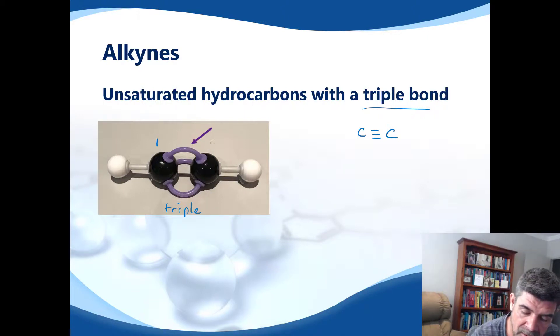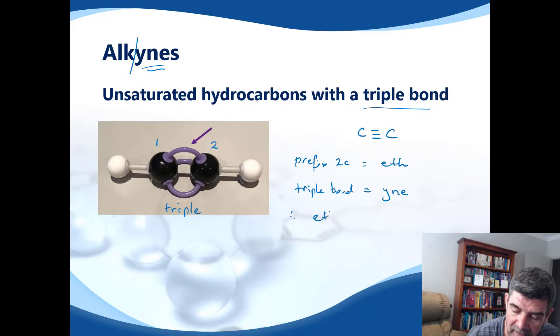Again, because there are only two carbons, our prefix for two carbons is ETH. And the group of hydrocarbons, which are also unsaturated hydrocarbons that have a triple bond, are called the alkynes. So the second part of the name is -ine. And so in this case, a triple bond would give you the -yne suffix. And therefore the name would be ethyne.